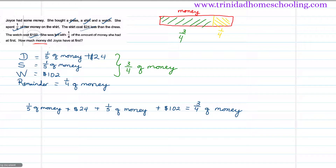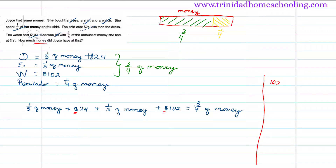We need to add the figures of the same units. The unit in this question is dollars, so we can only add the dollar amounts together. We add $102 and $24 to get a single dollar answer: $126. So the amount in dollars on this side is $126.